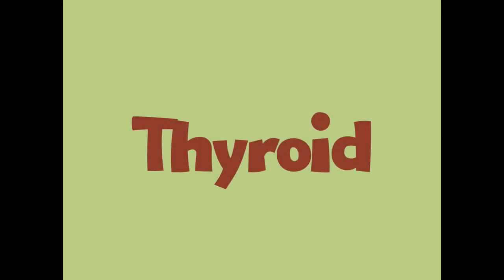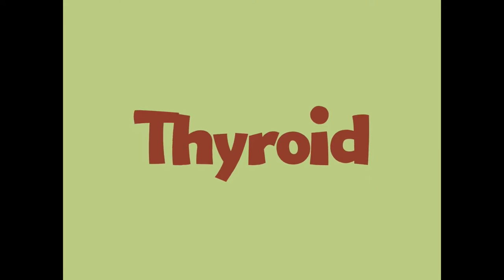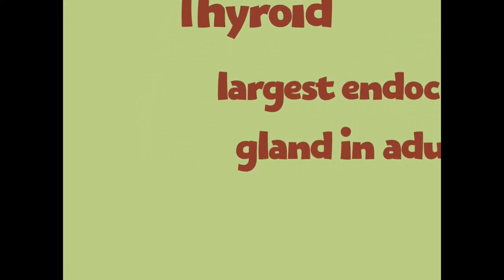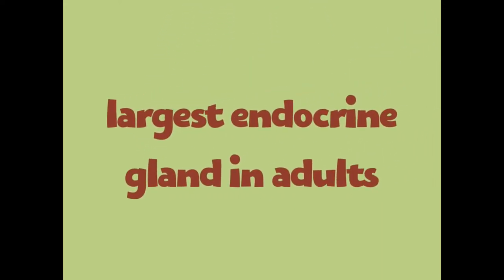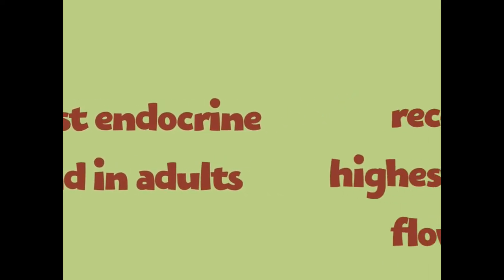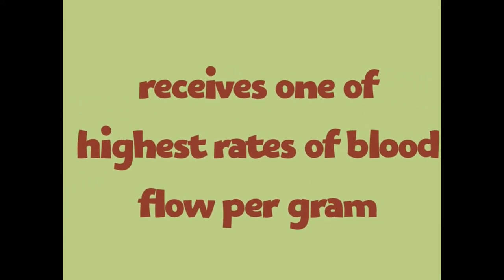Welcome to another video for anatomy and physiology. In this video I'm going to be highlighting the thyroid gland. The thyroid gland is the largest endocrine gland in the body. Recall from a previous video that the word endocrine refers to hormones that are being secreted into the bloodstream or into ducts.